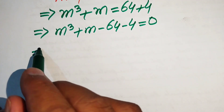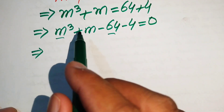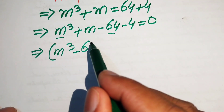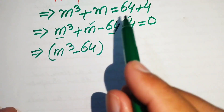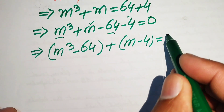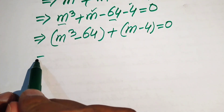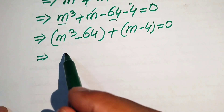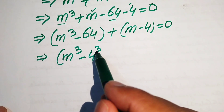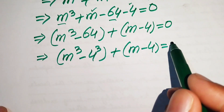In the next step, we make pairs: the cubic term with the constant 64, written as m³ - 64, and the linear term with -4, written as m - 4, so the equation becomes m³ - 64 + m - 4 = 0. We then write 64 as 4³, giving m³ - 4³ + m - 4 = 0.